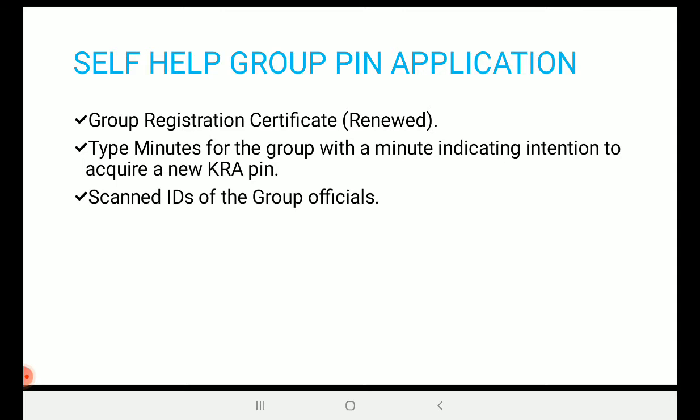Number three: you need to have the scanned IDs of the group officials — that is the chairperson, the treasurer, and the secretary. Lastly, you need to have the scanned KRA PINs for all of the officials. When you have put all of these requirements in order, you can proceed.